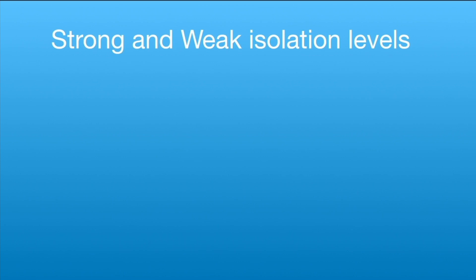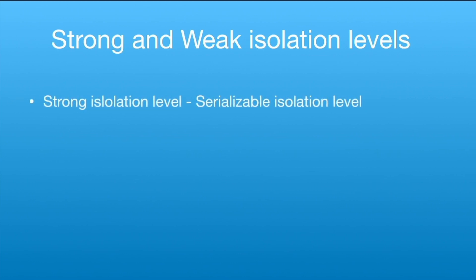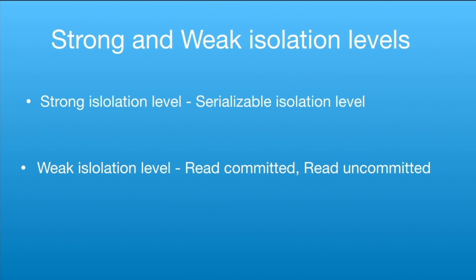There are two types of isolation levels: strong isolation and weak isolation. How much respect we give to the ACID properties defines the isolation level. With strong isolation, all transactions run in a serializable manner — only one transaction executes at a time and others are queued. However, the serializable isolation level degrades database performance because it takes a lot of time to execute many transactions.